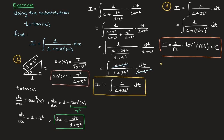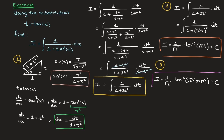We move on to the third and final step, where we write our answer in terms of x. Remembering that t equals tan of x, we replace t with tan of x to get I equals 1 over root 2 times inverse tan of the square root of 2 times tan of x, plus a constant of integration c. That's the final answer — that's how to integrate 1 over 1 plus sine squared of x using the substitution t equals tan of x.